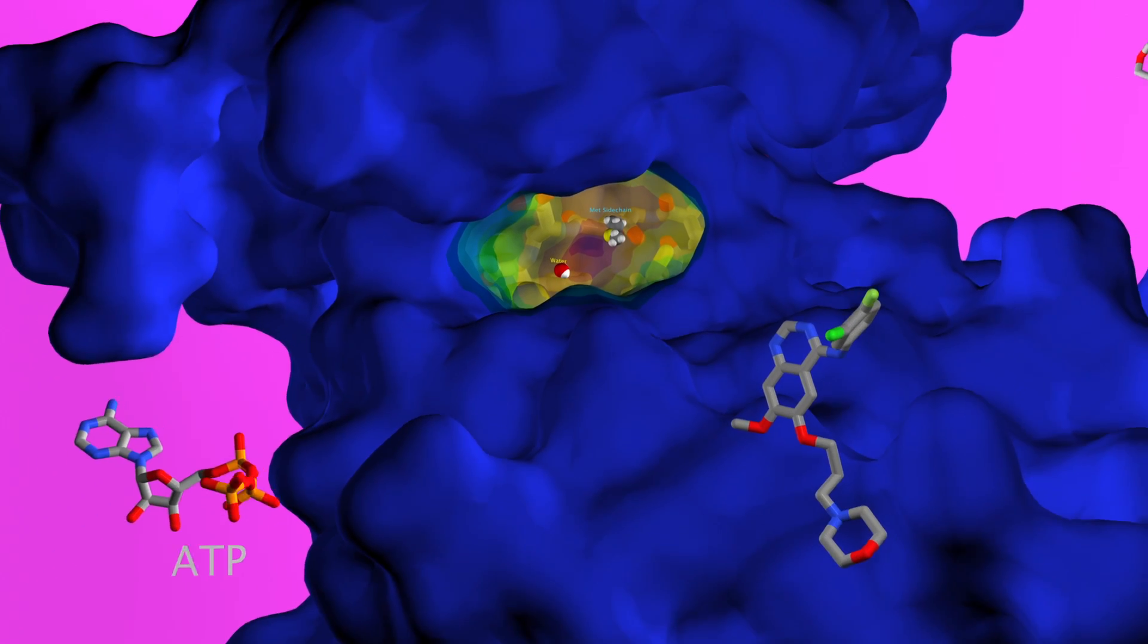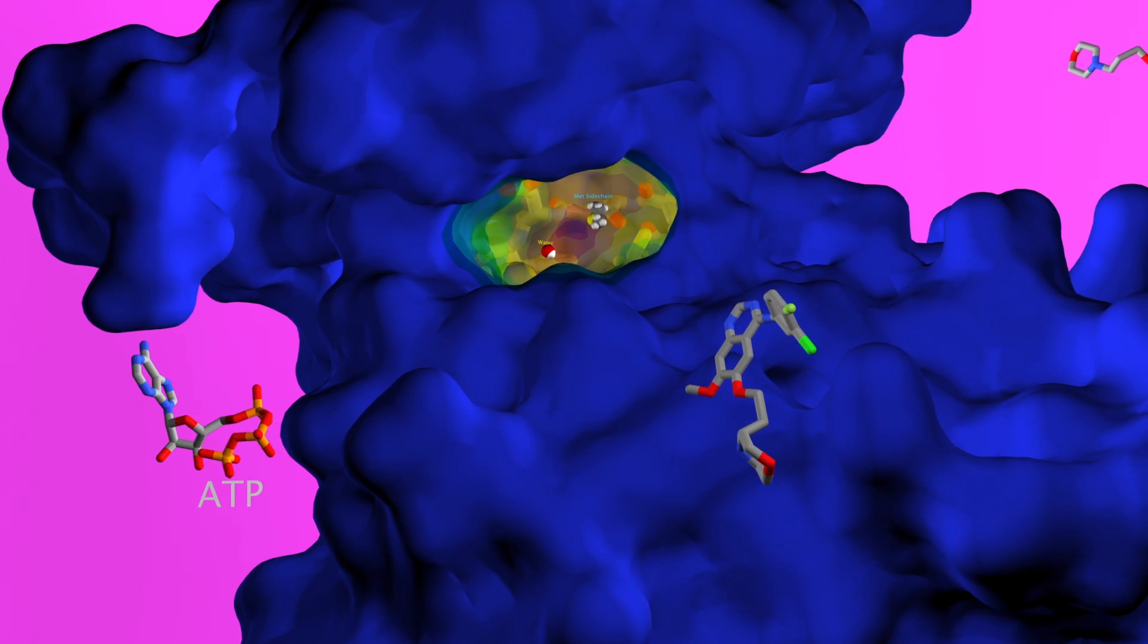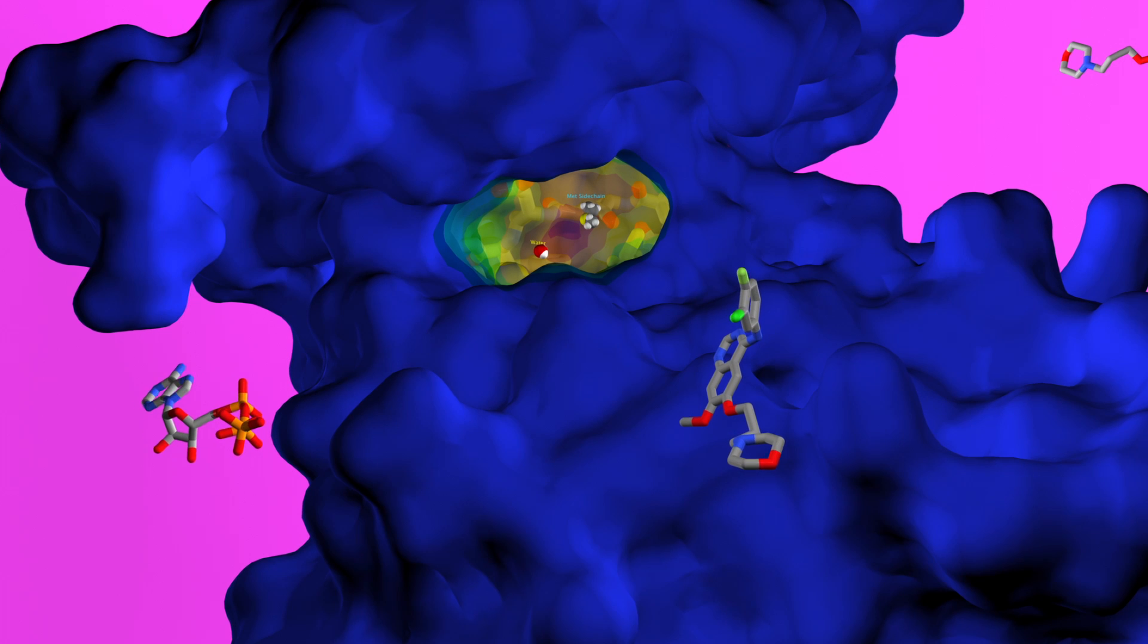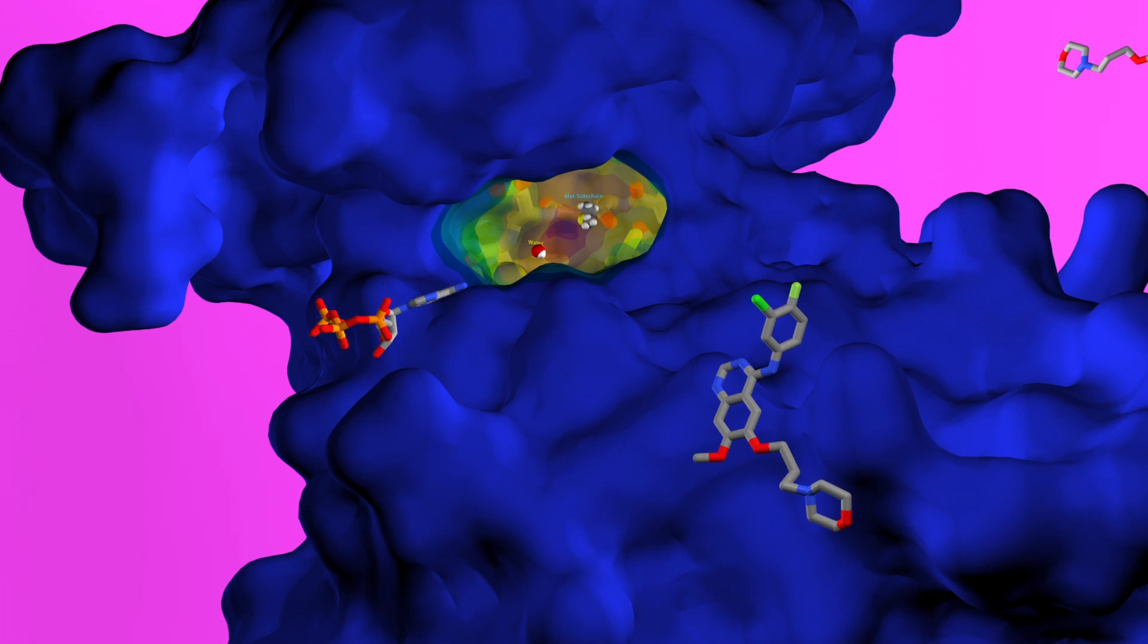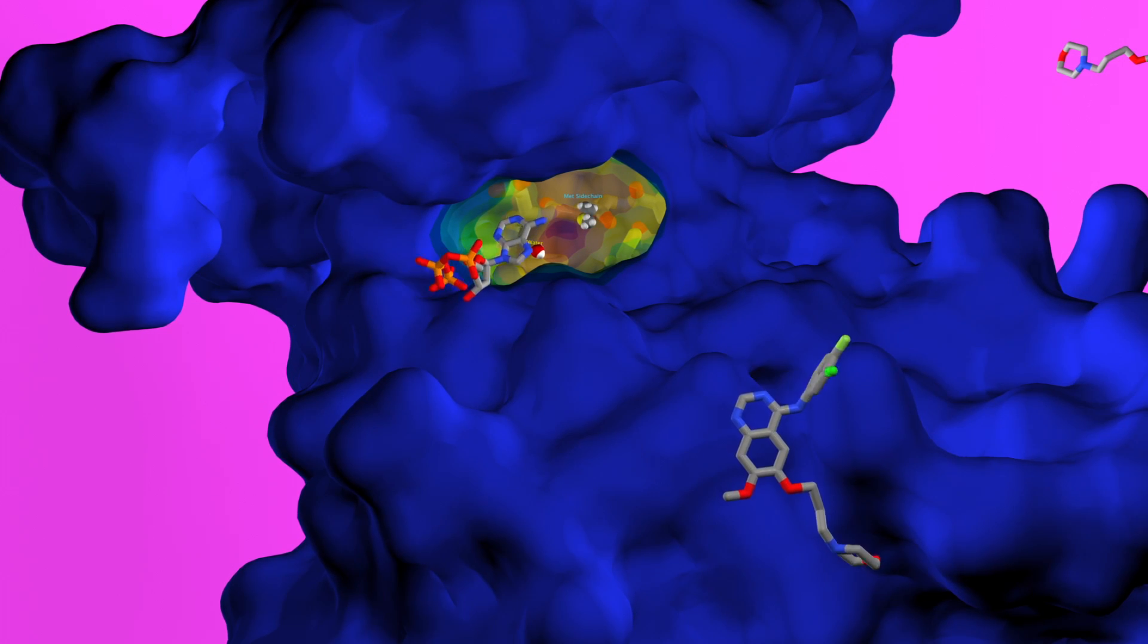The low binding affinity for Iressa allows the ATP molecule to enter the ATP binding site and bind to the protein. The binding of ATP to the tyrosine kinase domain of the protein leads to more phosphorylation of the tyrosine residue and as a result proliferation of cells and tumor growth once again.